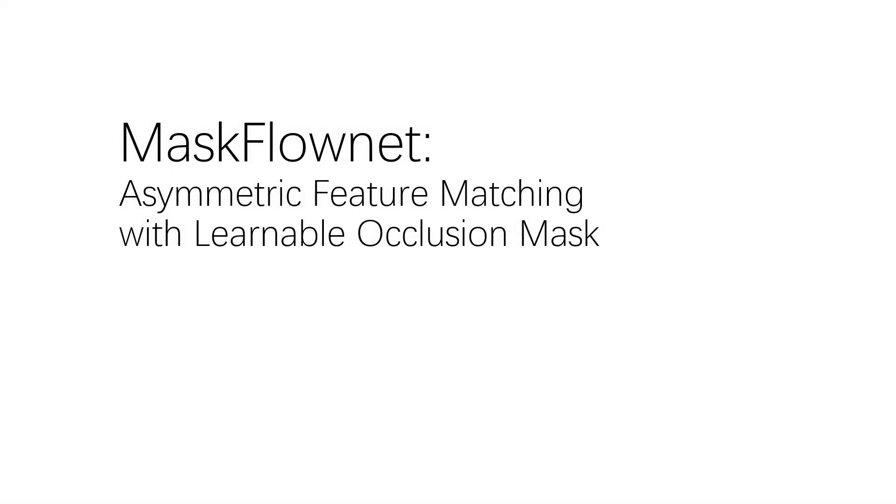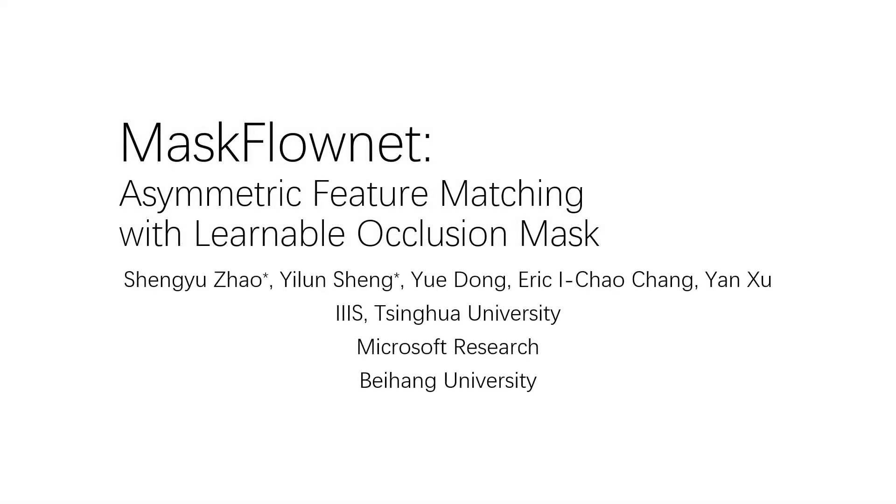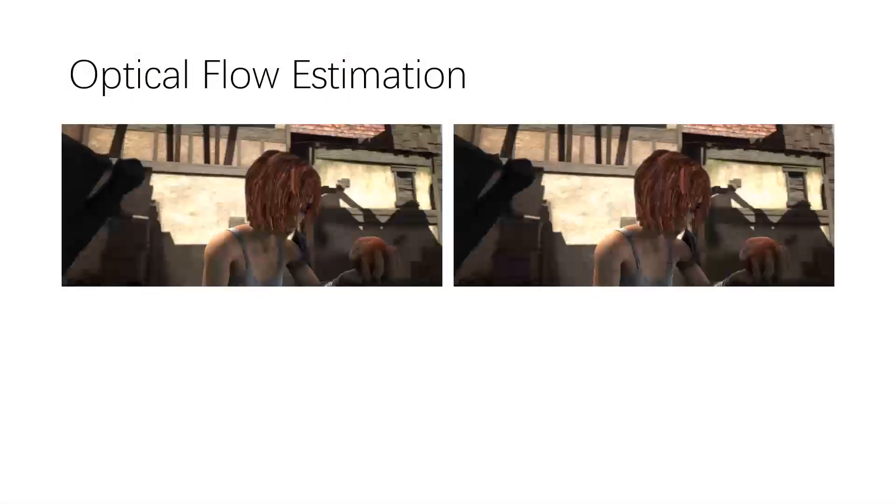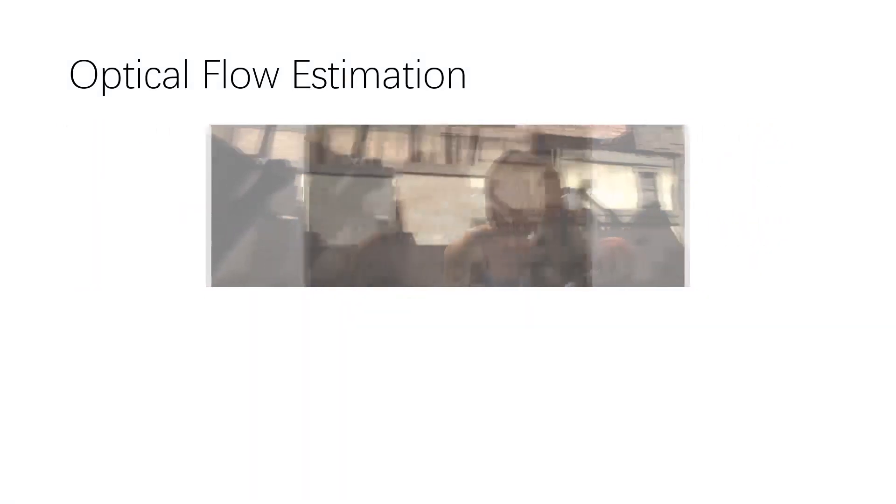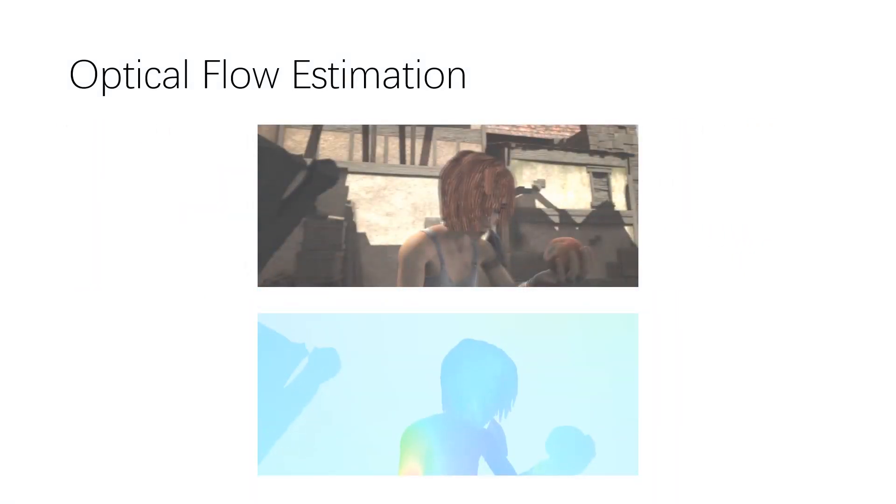MaskFlowNet: asymmetric feature matching with learnable occlusion mask. Optical flow estimation is to measure the pixel-wise correspondence between the source image and the target image. It is a core problem in computer vision and a fundamental building block of many real-world applications.